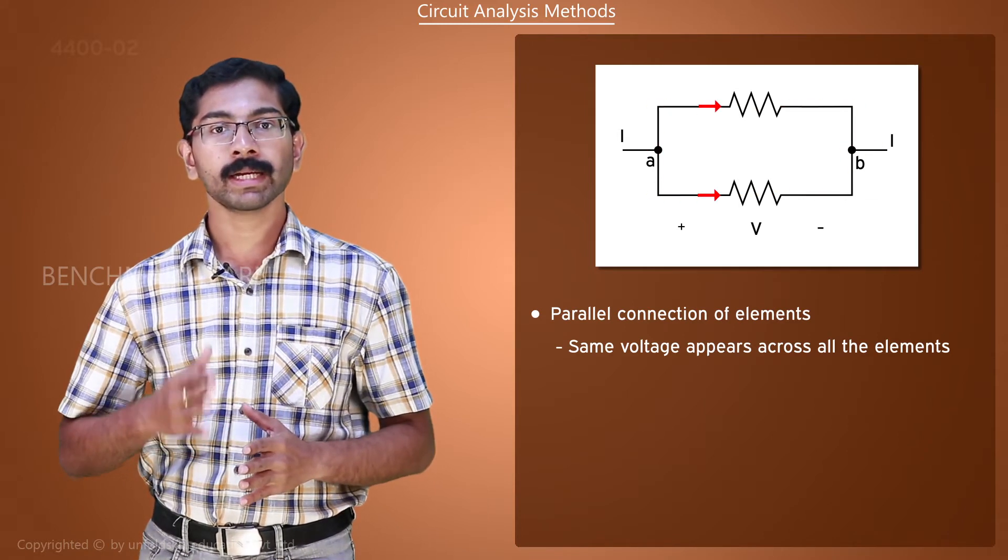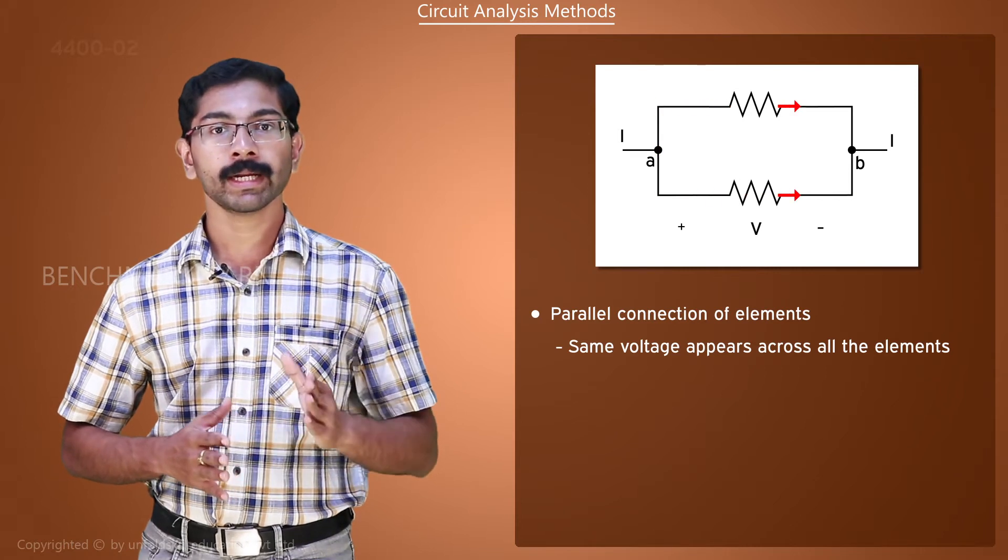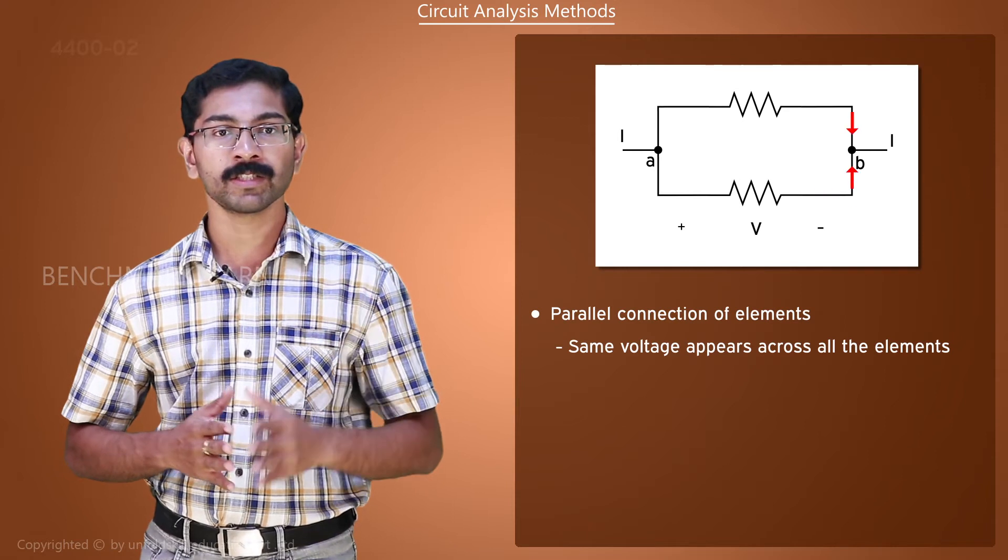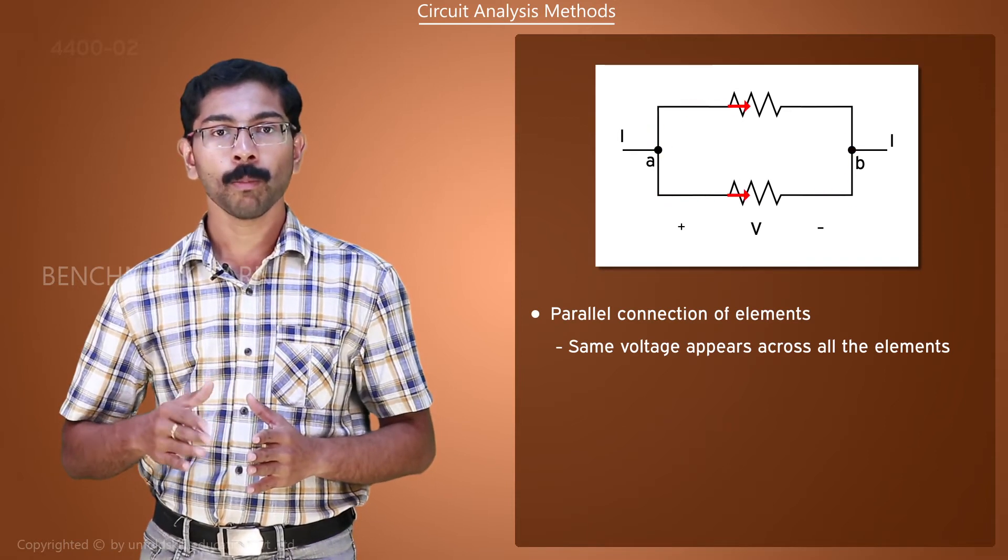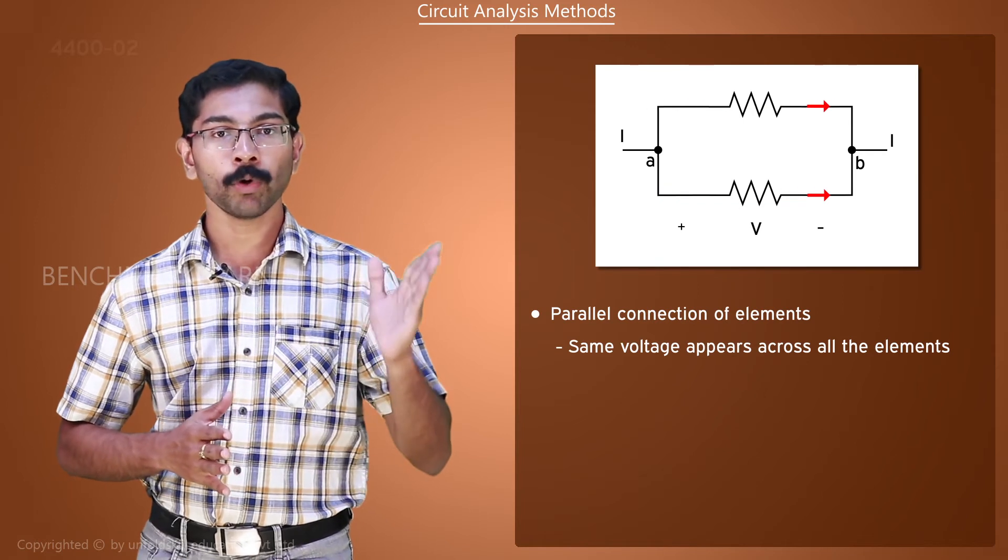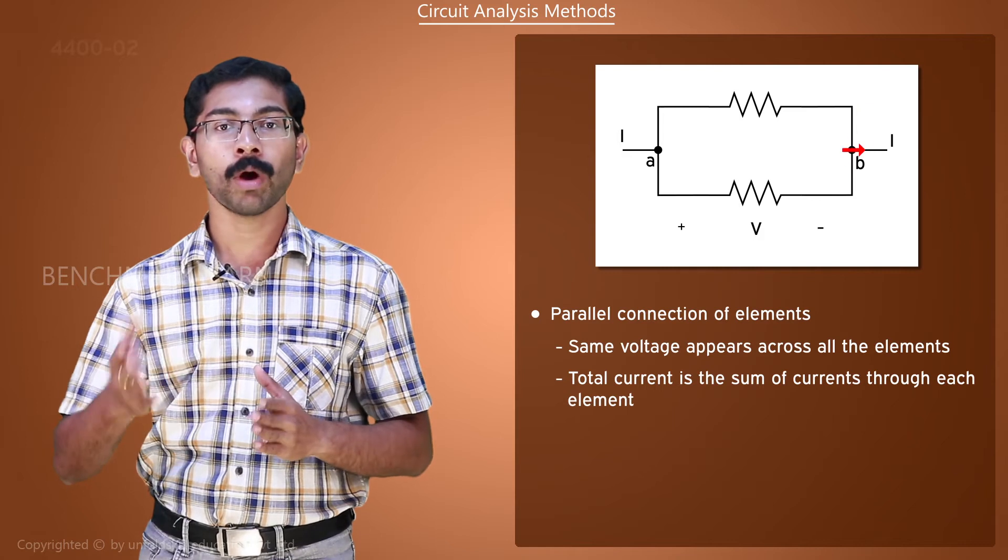For example, let the current enter through node A. At node A, the current has two paths. The current will prefer the least resistance path more, so more current will flow through the smaller resistance. At node B, the currents from the two paths join and flow out.